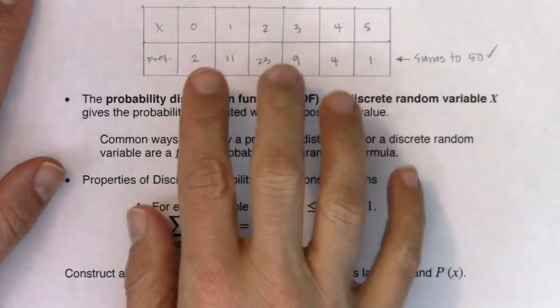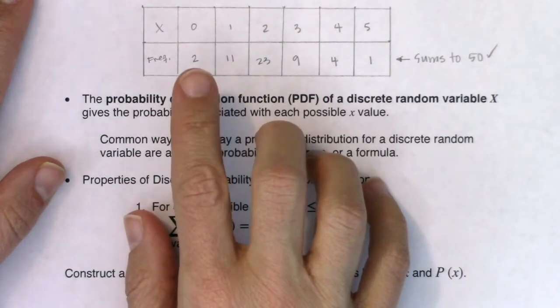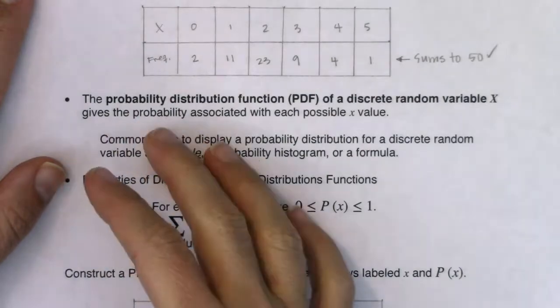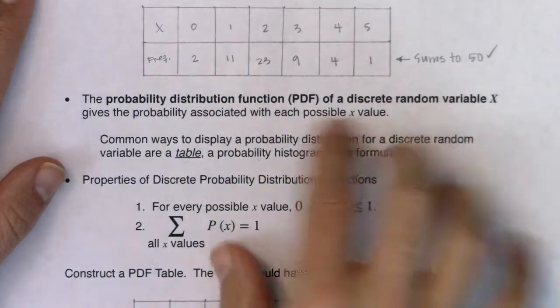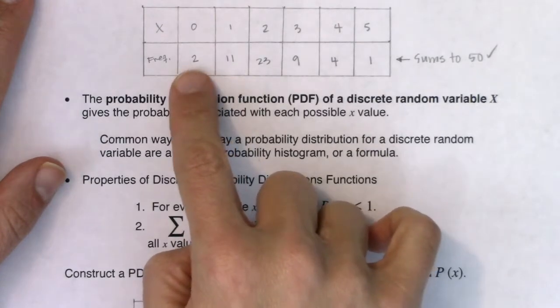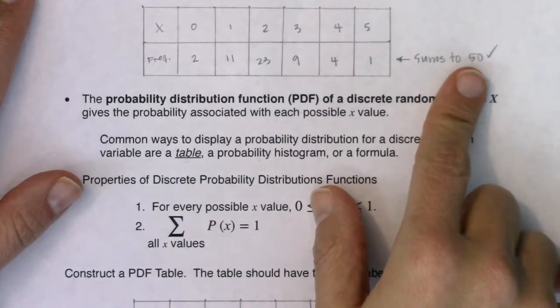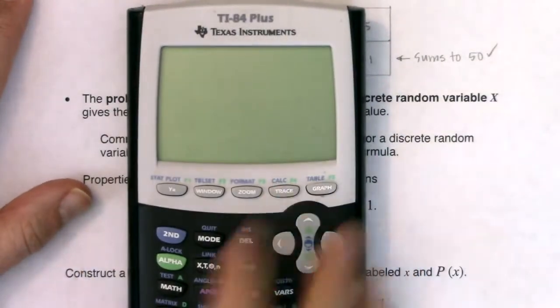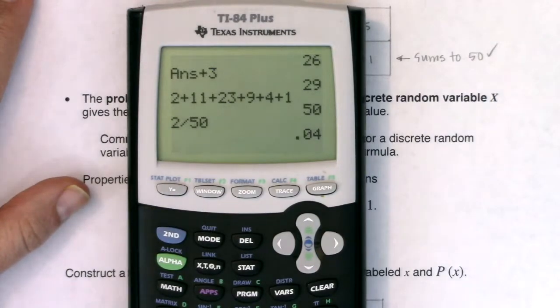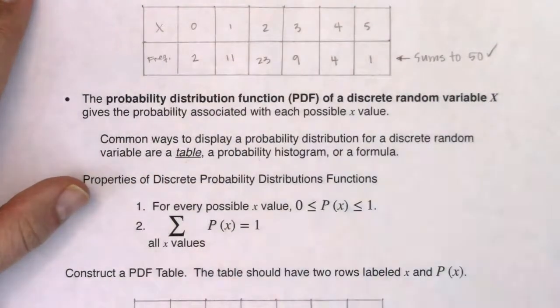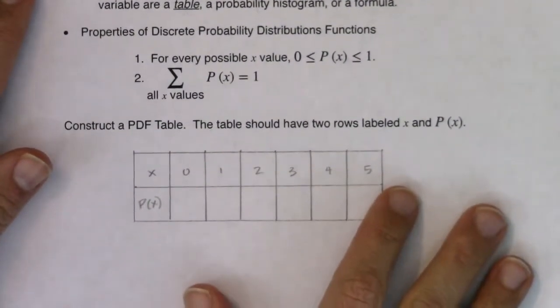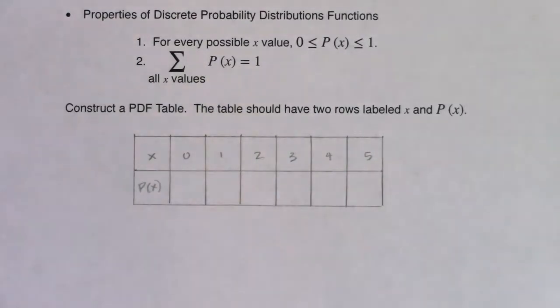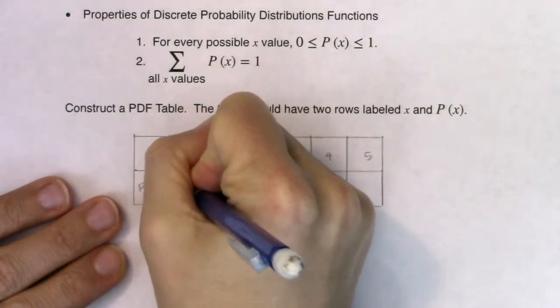So if we remember from chapter one, how do we go from frequencies to relative frequencies? How do I take these whole numbers and turn them into percentages, probabilities, proportions, ratios, fractions? You take your frequency and divide it by your sample size. So instead of writing 2 on my new PDF, I'm going to go to my calculator, take 2, and divide it by 50. So I'm going to write the relative frequency, the proportion, the probability of 0.04.